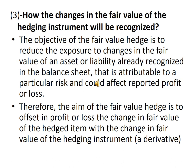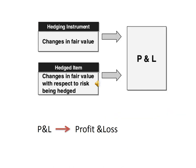Number 3 asks how changes in the fair value of the hedging instrument will be recognized — this is about the theoretical background of fair value hedge accounting. The objective of a fair value hedge is to reduce the exposure to changes in the fair value of an asset or liability already recognized in the balance sheet that is attributable to a particular risk and could affect reported profit or loss. Therefore, the aim is to offset in profit or loss the change in fair value of the hedged item with the change in fair value of the hedging instrument. The changes in fair value of both the hedging instrument and the hedged item with respect to the risk being hedged will be recognized in profit and loss in the same period.